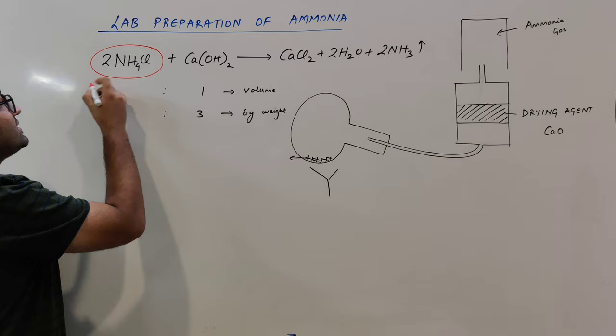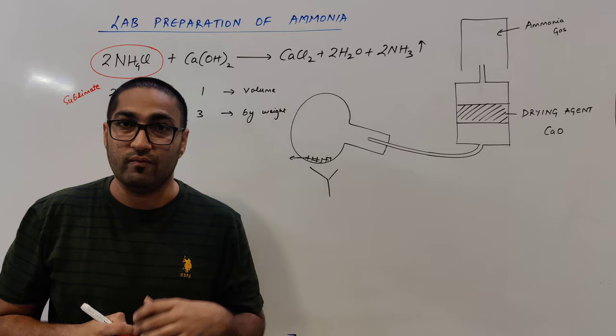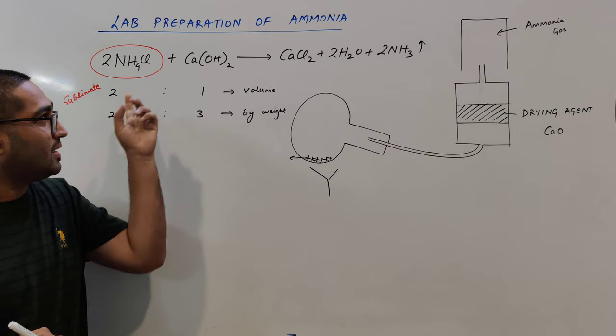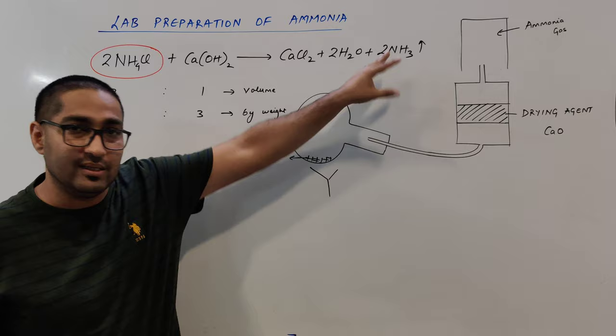One important point is that ammonium chloride is a sublimating substance. Because it sublimes, we need to account for the loss of sublimation and ensure the reaction proceeds properly with the reactants.